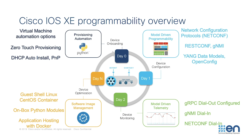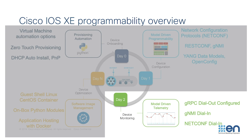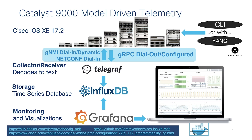Let's begin with a quick overview of the programmability features within iOS XE. We're going to focus on the model-driven telemetry features today including gRPC, gNMI, and the NetConf dial-in telemetry interface. Taking a look at the solution overall, at the very top we have the Catalyst 9000 series of devices, all running iOS XE 17.2. We can turn this feature on with CLI, or with Yang data models, and on top of that we can do some automation potentially using Ansible. We'll see examples for all of these for how to turn on the gRPC dial out or configured telemetry interface.